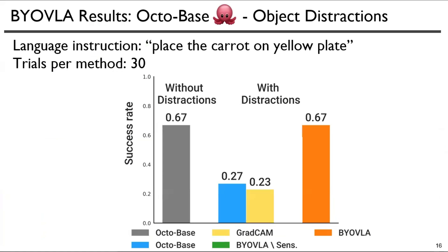We also find that if you replace our sensitivity probe with a traditional attribution method like GradCam, or just naively remove every task-irrelevant object from the image without accounting for sensitivity, the nominal performance is not achieved.